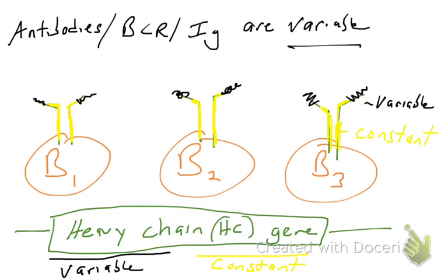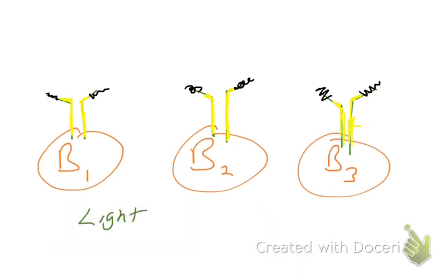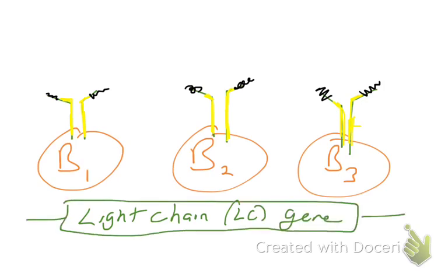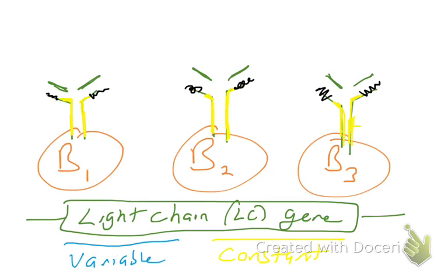This is one way by which B cell receptors, Ig, or antibodies can vary from one B cell to the next. Similarly, all B cells turn on the light chain gene to make the light chain protein. Through VDJ recombination, the beginning of the light chain gene will be different in all of these B cells, while the end of the light chain gene will be constant. The light chain protein constant region is the same in all these B cells, but the variable region is different, due to cutting and pasting random pieces of DNA through VDJ recombination.